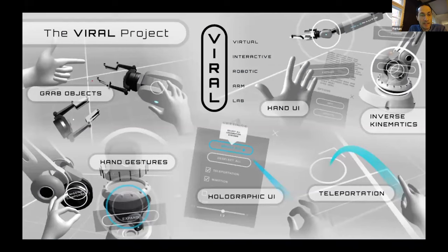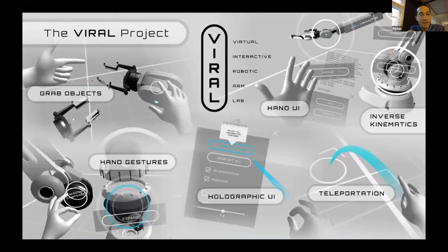The advanced VR interactions and hand tracking masterclass just started this week. It's a diverse group from different organizations — this cohort includes developers and designers from Carnegie Mellon University, Harvard, Autodesk, HP, Deloitte, and Unity Studios. We really want to bring top individuals working on VR/AR development together along with our trainers, and keep this cohort-based format for our other advanced classes.